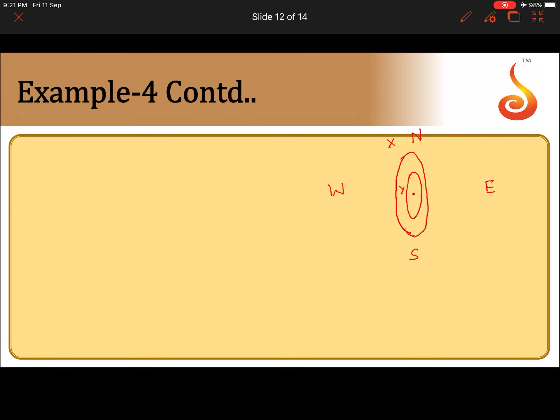Now current direction is given as per the observer facing west. Observer is facing west means observer is towards the east of the coil, he is facing west. So he is standing here, he is looking in this direction. With respect to him, the sense of current in X is anti-clockwise. In Y it is clockwise.